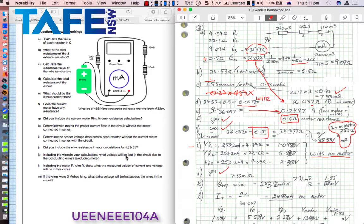Part K, including the wires in your calculations, what voltage will be lost in the circuit due to the conducting wires? What a great thing to know. Luckily the wires aren't very long. V drop wires, 253.2 milliamps times the resistance of the wires, which is only 7.33 milliohms, to give us a tiny voltage drop, just 1.85 millivolts.